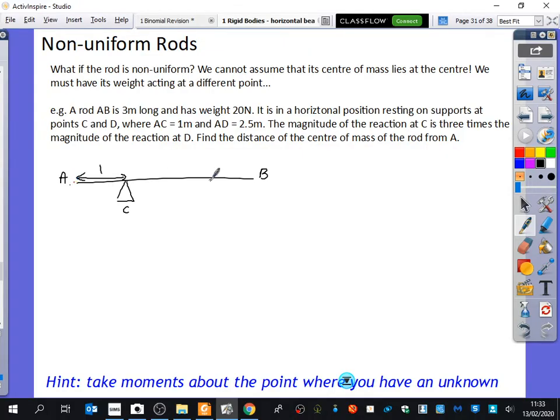So it's saying between A and D, that whole distance is 2.5. So that distance there is 1.5, which means that this distance is 0.5, because the whole thing is 3.